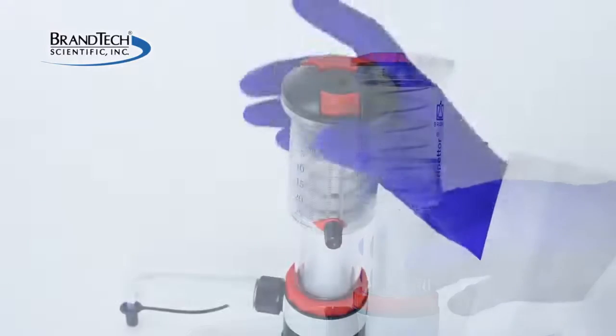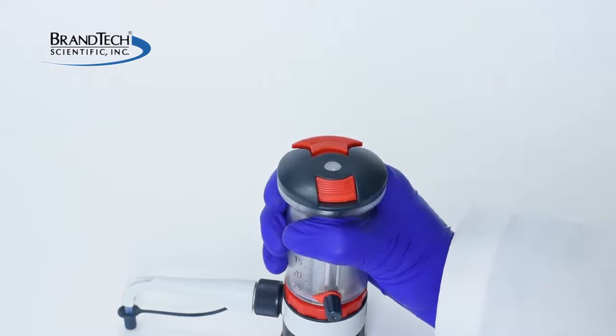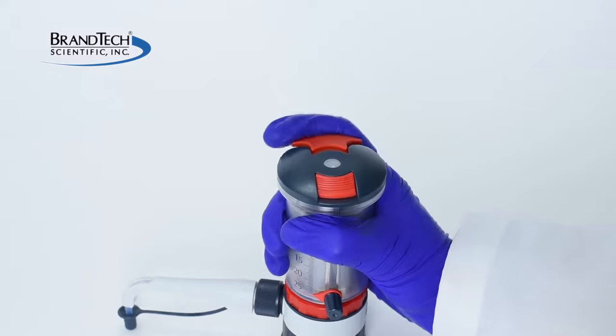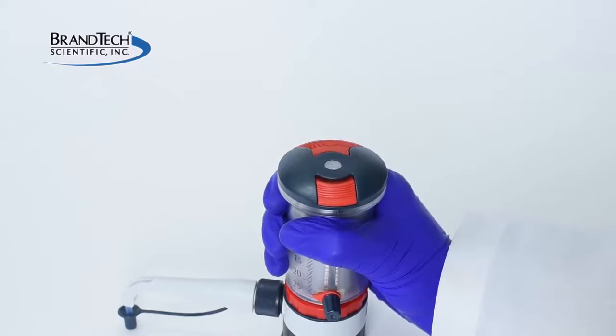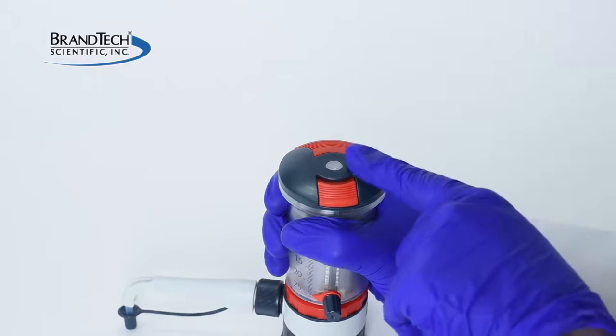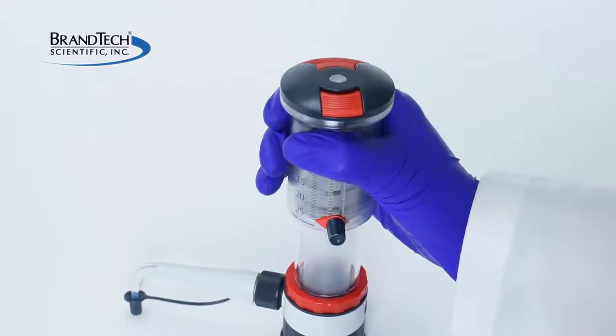Next, push the pump assembly down until the white tab at the top of the dispensing cartridge fills the hole in the top of the assembly. Slide the red piston lock to secure the tab in place. When the cartridge is locked in place, the white tab will fill the hole at the top of the assembly and raise and lower with the piston.